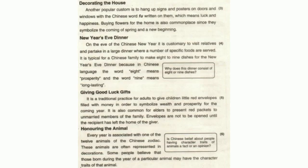Urdu translation: Har saal chini burj ke naqshe ke 12 janwar mein se ek se munsilik hai. Aksar in janwaron ki rashon ki shakal mein numainagi ki jaati hai. Kuch logon ka manna hai ke wo log jo ek makhsoos janwar ke saal mein paida hon, unmein us janwar ki fitri khasusiyaat maujood ho sakti hain.